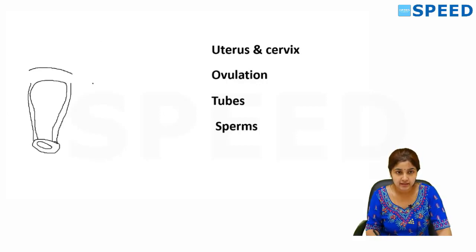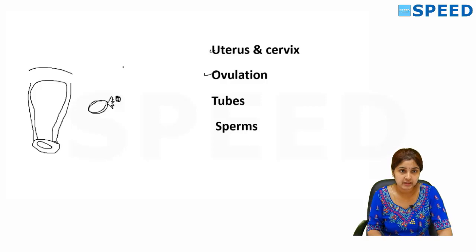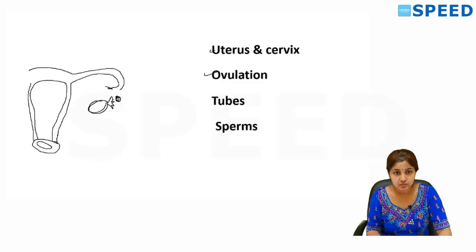The next is that the ovary should produce the egg properly, which means that every month an ovum needs to be released — ovulation has to occur properly. Next, this ovulated egg needs to travel through the passage, which is the tubes, to reach the uterus.